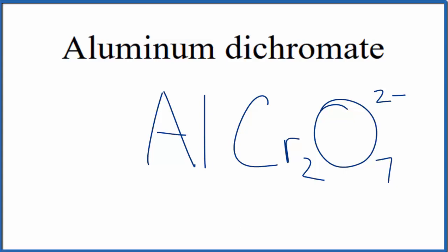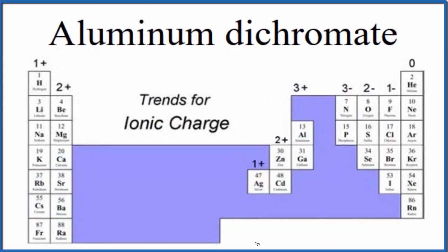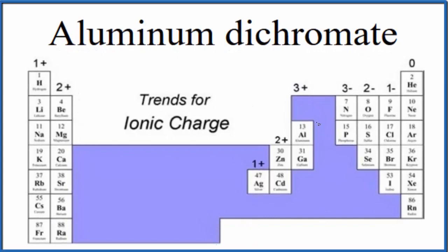For aluminum, we can look that up on the periodic table, and here's our periodic table organized by ionic charge. We come over here and here's aluminum, group 13, sometimes called 3A, so aluminum will have a 3-plus ionic charge.